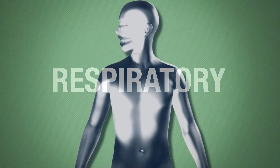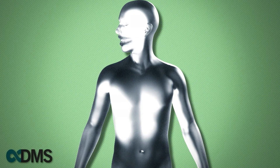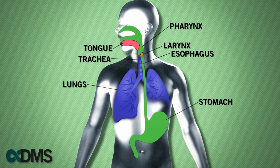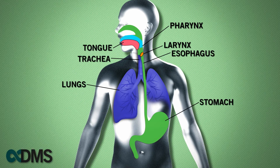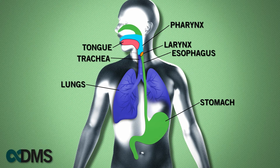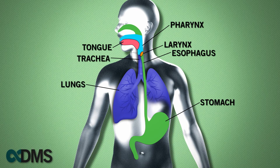The first is the respiratory system of dysphagia, best defined as the ability to hold your breath for one to two seconds while the food passes over the airway and into the esophagus. As the food falls from the back of the tongue to the pharynx, your vocal cords should close, and your epiglottis, shown in orange, should flip down over the true and false closed vocal cords to provide a three-prong level of protection.